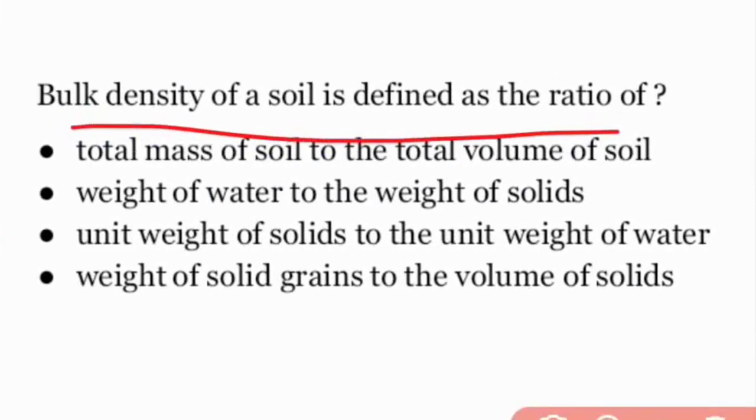Next, the bulk density of a soil is defined as the ratio of what? Bulk density of soil is defined as total mass of the soil to the total volume of the soil.